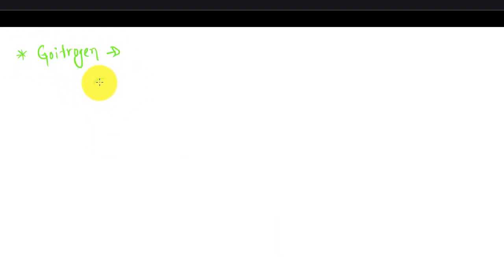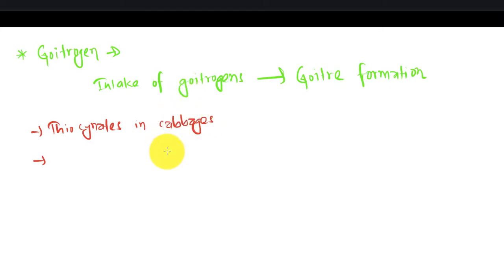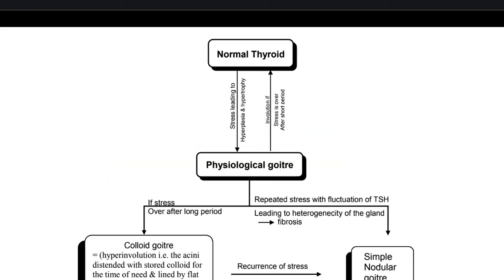Talking about goitrogenic reasons, intake of goitrogens will result in goiter formation. Thiocyanate present in cabbage, drugs like para-aminosalicylic acid, and antithyroid drugs are examples.